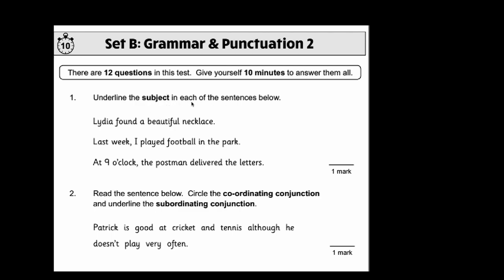Okay, let's go through the questions. Number 1. Underline the subject in each sentence below. So basically, who is the main character in each sentence? So the first one will be Lydia. Lydia found a beautiful necklace. She's the main character. This is what she's done. Last week I played football in the park. Who's this about? It's about this person: I. At 9 o'clock the postman delivered the letters. The postman is the subject in this sentence.